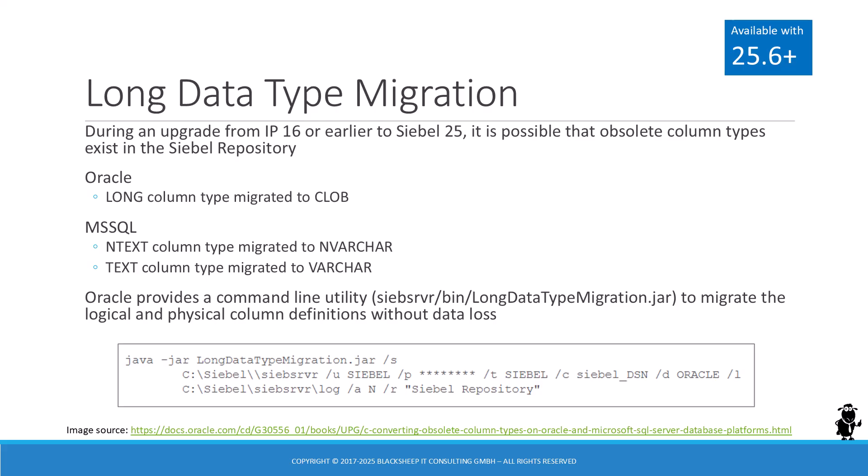Customers still using Siebel versions prior to IP17, like IP16 or earlier, are feeling increasing pressure to upgrade to the latest release as operating systems, databases, and other important parts of the Siebel architecture are required to stay on current versions. Besides being left behind on certified or supported auxiliary systems, customers on legacy Siebel versions are missing out on many new architectural and functional features. The process of upgrading Siebel CRM from version IP16 or earlier is a complex project requiring a lot of planning, expertise, and effort. It's good to hear that upgrade utilities are constantly improved, as demonstrated by the availability of a new utility named Long Data Type Migration, which assists with the conversion of obsolete physical column types — for example, the Long column type in Oracle is migrated to CLOB, character large object.